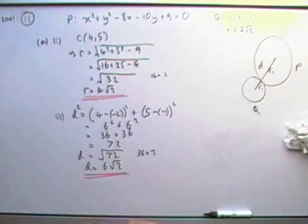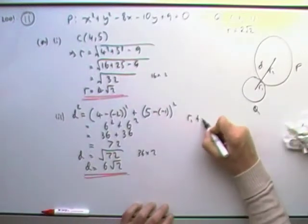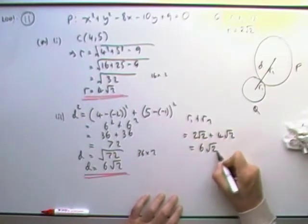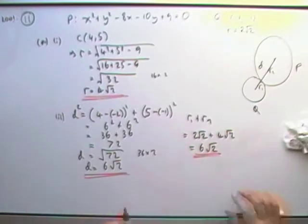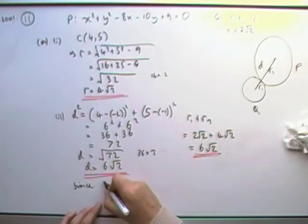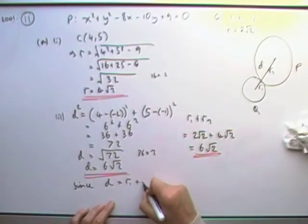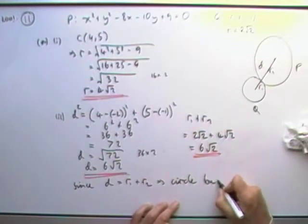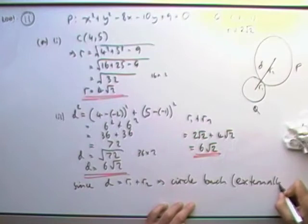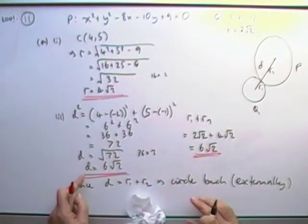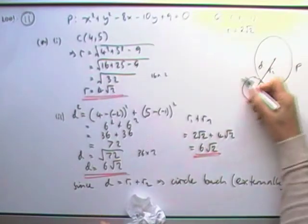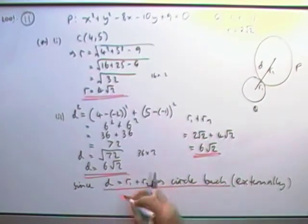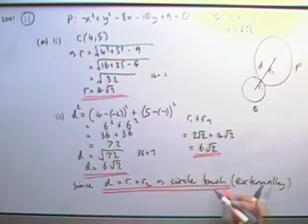So there we are. Distance between the centres is 6 root 2. But R1 plus R2 is 2 root 2 plus 4 root 2. The root's been the same so I can add them. It's 6 root 2. Then I suppose I better make a statement. Since D equals R1 plus R2, hoping that'll do instead of the words, that means the circles must touch. But if I want it to be specific, it'll be externally. Because if the distance was equal to the difference in the radii, that means the circles would have been touching the small one inside that bit, internally, but only said they touch. Since the distance between the centres is equal to the sum of the radii, you may want to put that in words. That means the circles touch.